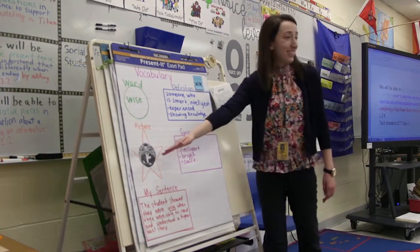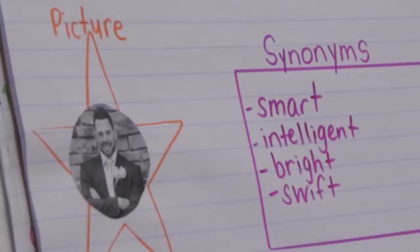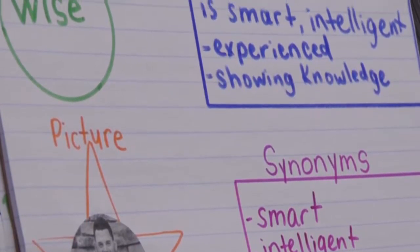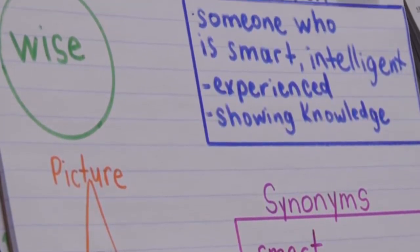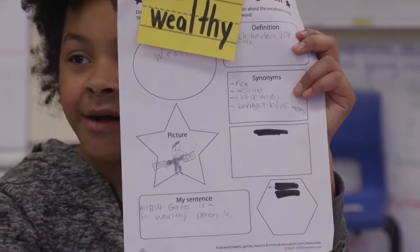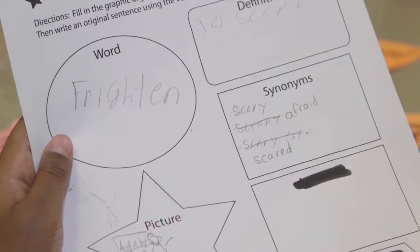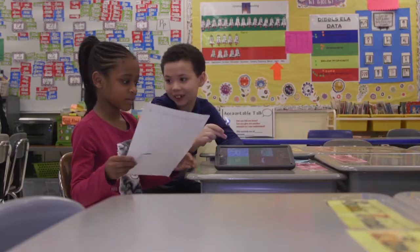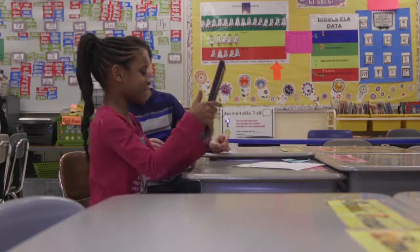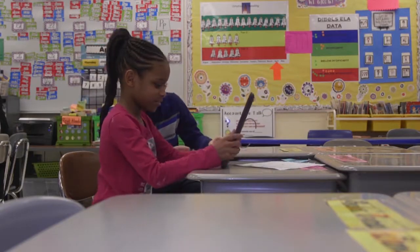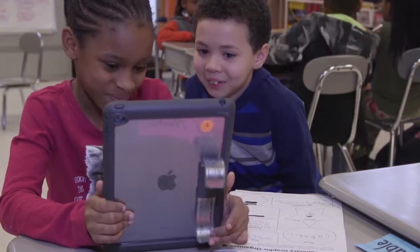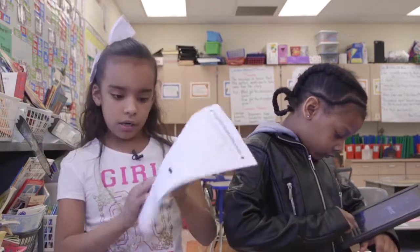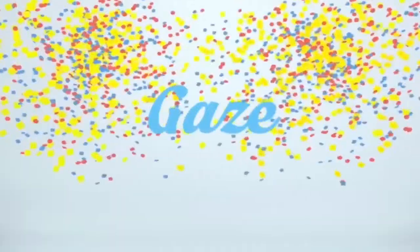The first step in this English language arts lesson is completing a paper graphic organizer with a definition, synonyms, and a sentence. Then comes the fun part: going online with the school's filtered internet to search for an image that illustrates the word.